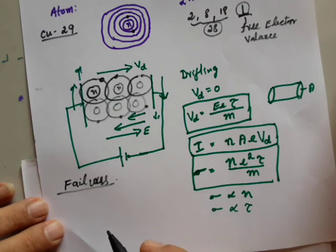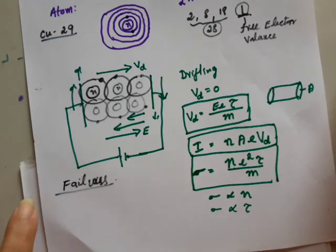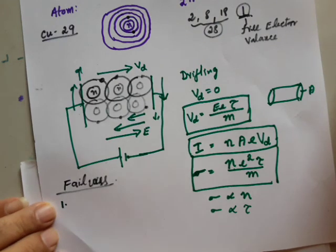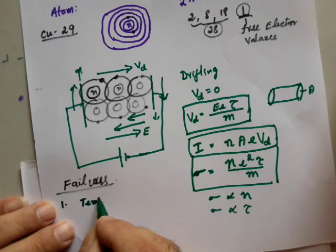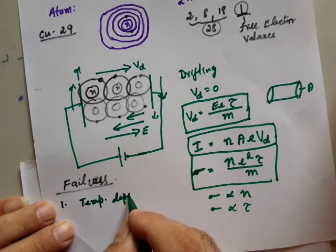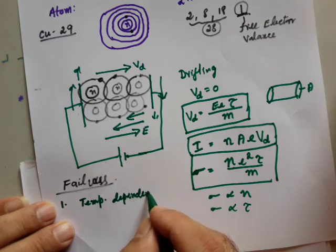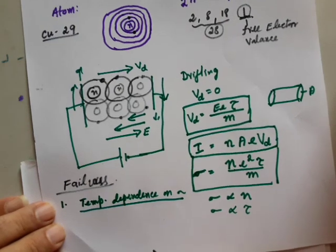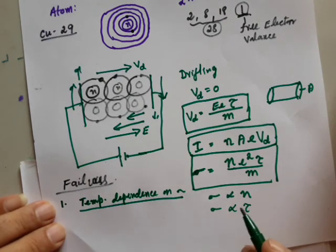We are aware that classical free electron theory failed to explain many facts. I will try to explain only two important things. The first failure of the classical free electron theory is based on temperature — that is, temperature dependence on sigma. Let us try to see how sigma, conductivity, depends on temperature.